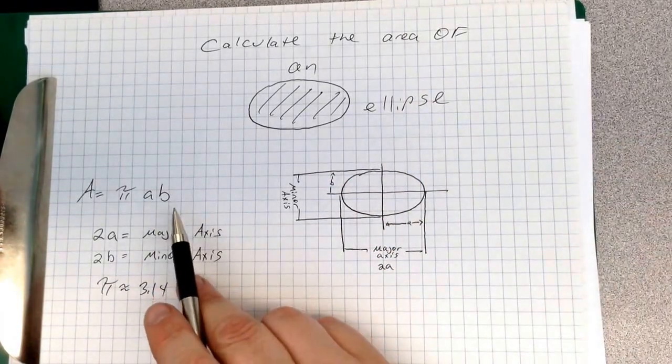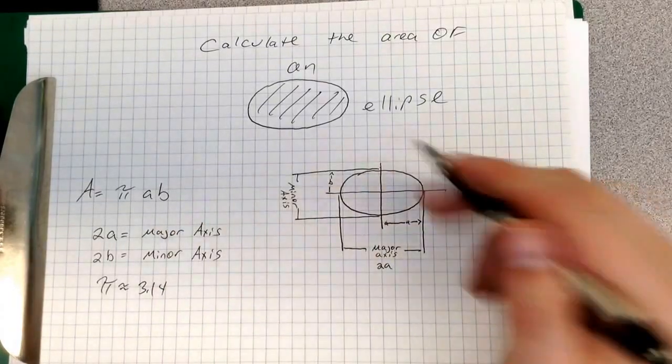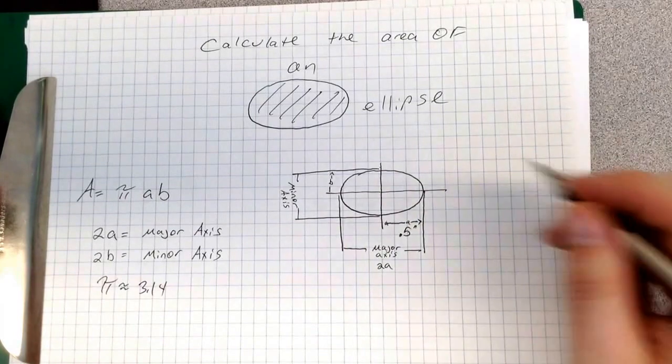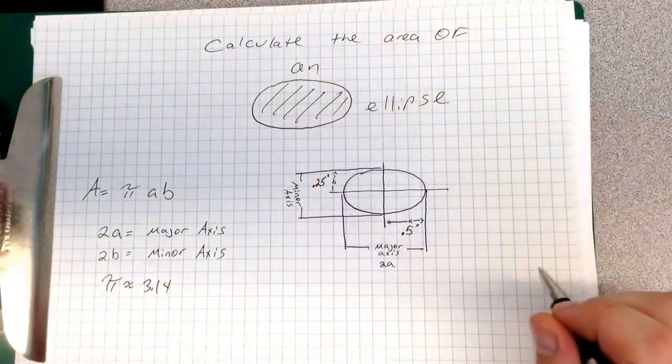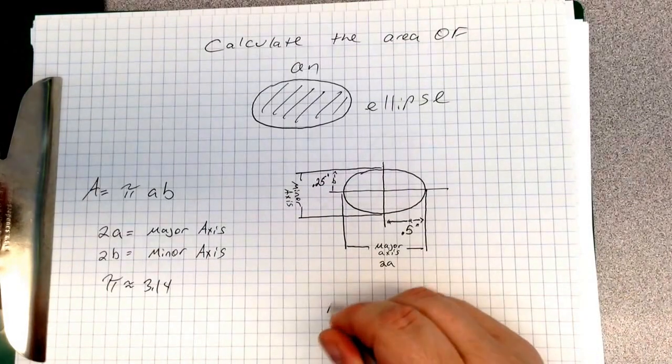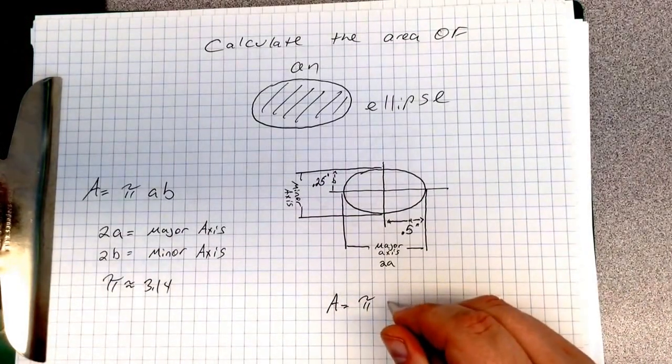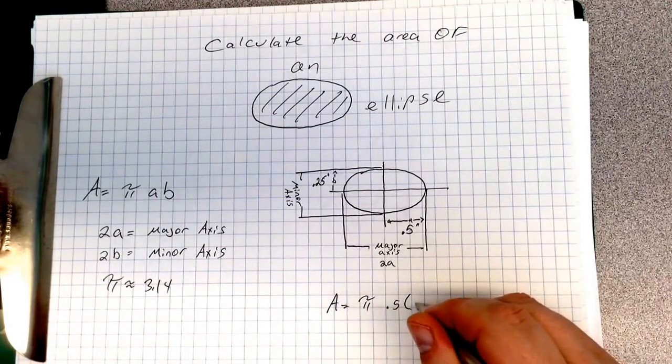So our equation is pi times a times b. Now let's say that with this, our a is 0.5 of an inch, so a half inch. Let's say our b is 0.25 of an inch. So if we set this up, area equals pi times 0.5 times 0.25.